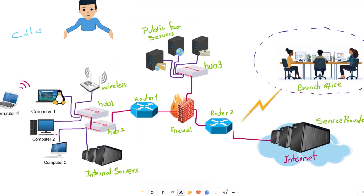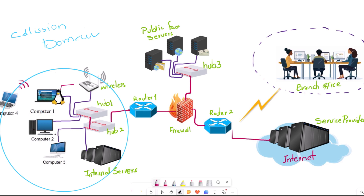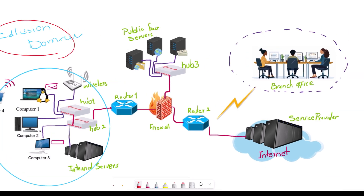Now let's look at what a collision domain is. In simple terms, the collision domain means that only one computer on the network will be able to send data while other devices are waiting. But what happens if two computers would like to send data at the exact same time? If both devices send data simultaneously, a collision will happen and the data will crash over the network.